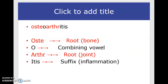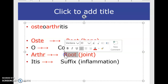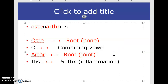Here's an example: osteoarthritis. Oste is the word root meaning bone. The O is a combining vowel that connects osteo to arthro. Arthro is another root word meaning joint. Itis is the suffix at the end of the medical term meaning inflammation. So itis means inflammation.